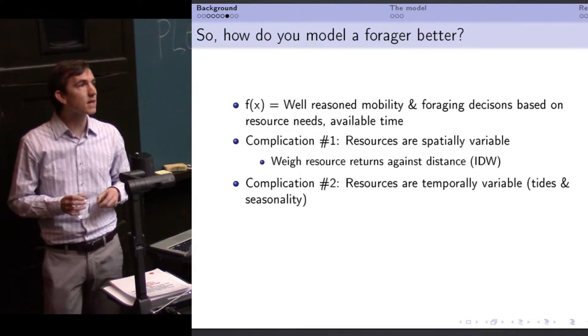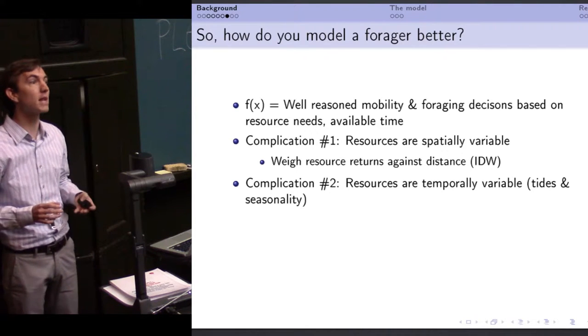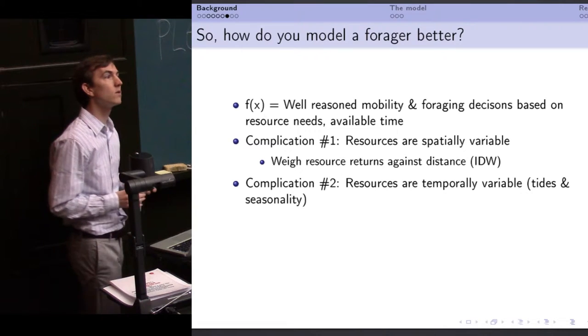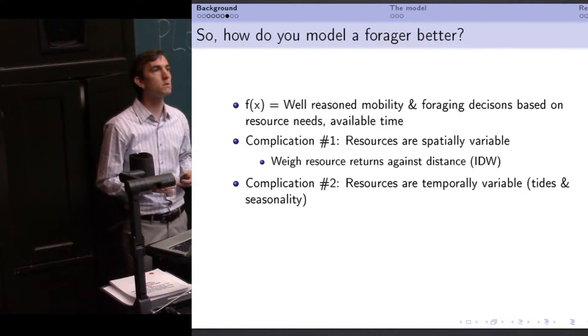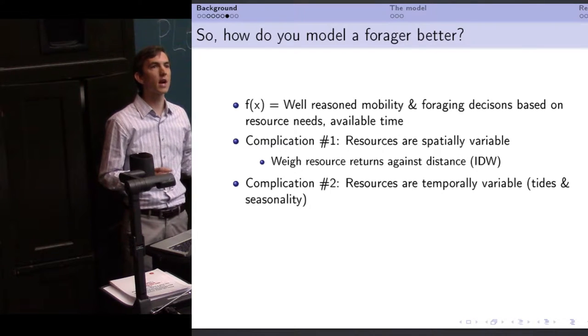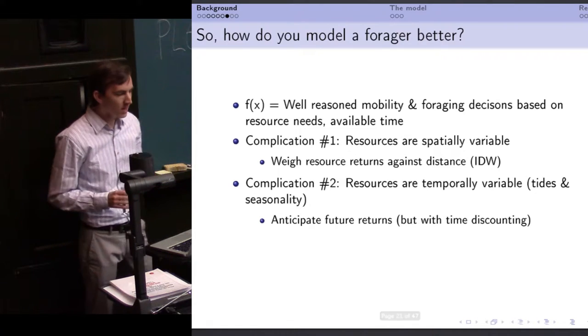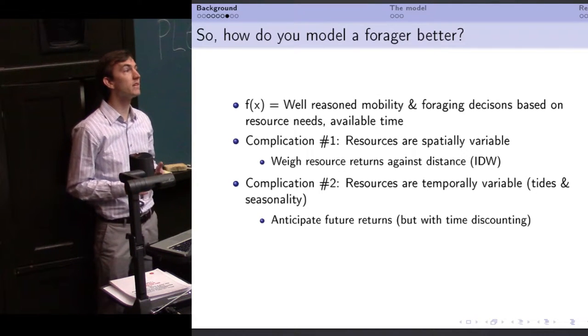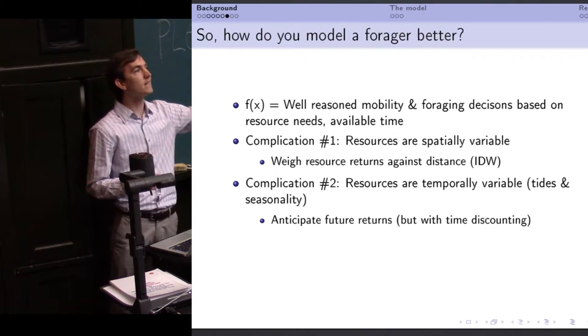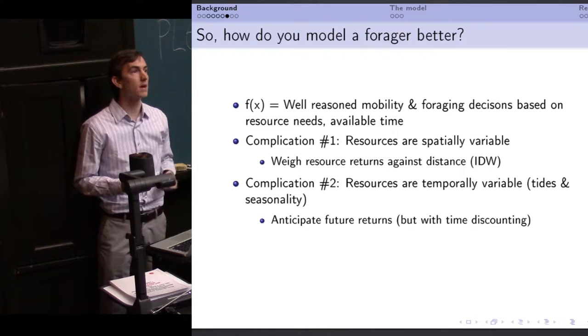Complication number two is that resources are also temporally variable, both in terms of seasonality for plant resources for example. But in the case of shellfish, there are also a tidal cycle controlled by the moon that causes extra good low tides and extra not so good neap tides in a two week cycle. So in order to be an effective forager, we need to anticipate future returns. You need to know in advance when those resources are going to be there so that you can show up at the right time and not miss it.